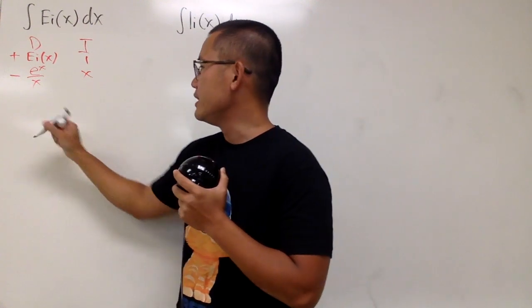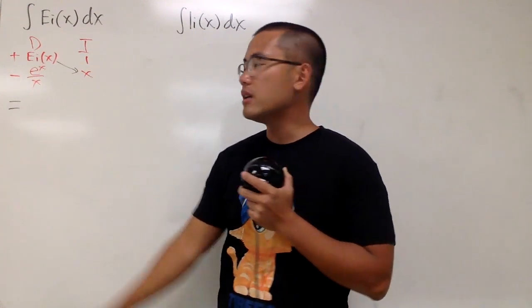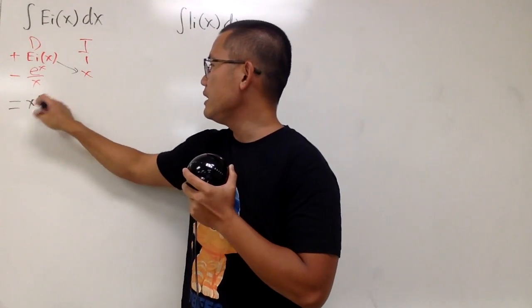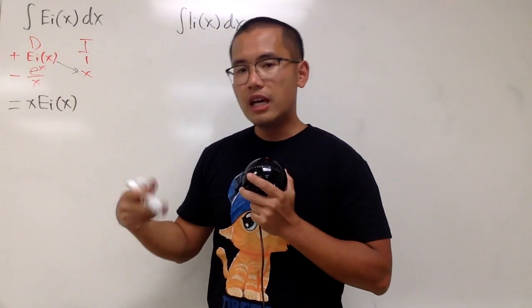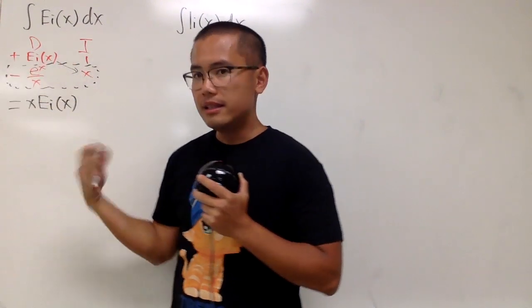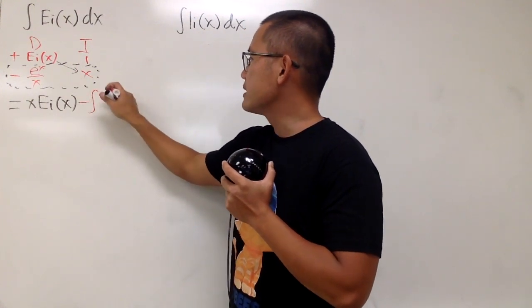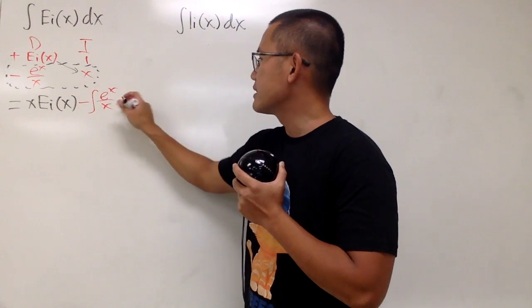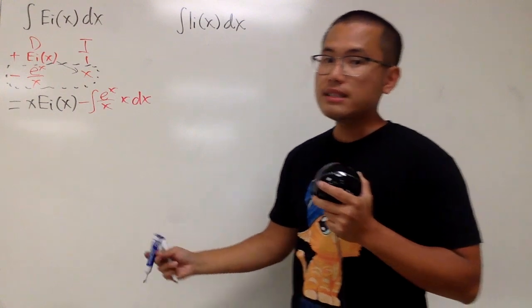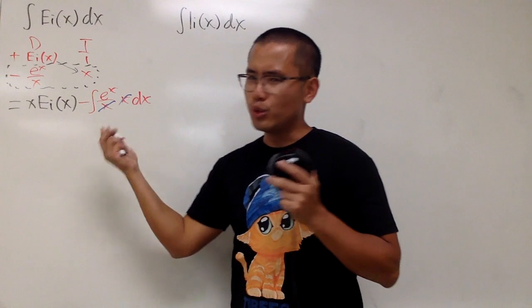This is very nice, because when we do this times that, that's the first part of the answer. So it's positive x times that, x times ei(x). That's the first part of the answer. For the second part, we're just going to multiply this. We have minus integral e^x/x times this x. And of course, we are still in the x world, so put on the dx. This is so nice, because x and x cancel each other out. So we just have to integrate e^x, which is just e^x.